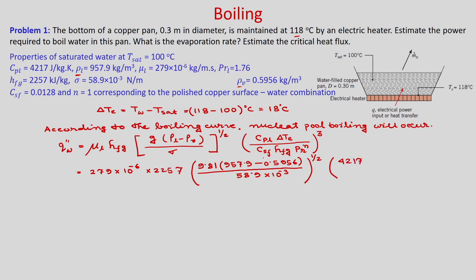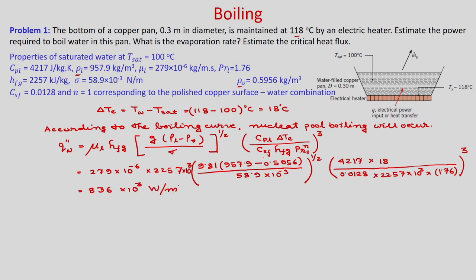Putting all the values: mu L is 279 times 10 to the power minus 6, H_FG is 2257 kJ/kg (so 2257 times 10 to the power 3), g is 9.81, rho L minus rho V is 957.9 minus 0.5956, divided by sigma 58.9 times 10 to the power minus 3, to the power half, times CPL 4217, times delta T of 18 degree centigrade, divided by CSF 0.0128 times H_FG times Prandtl number 1.76 to the power N, where N equals 1, all to the power 3. The result is approximately 836 times 10 to the power 3 Watt per meter square.